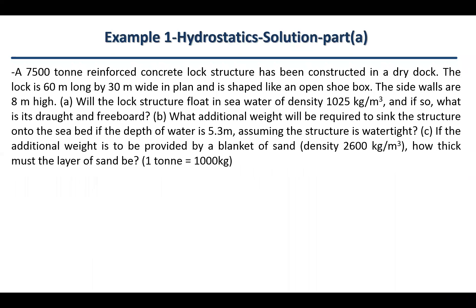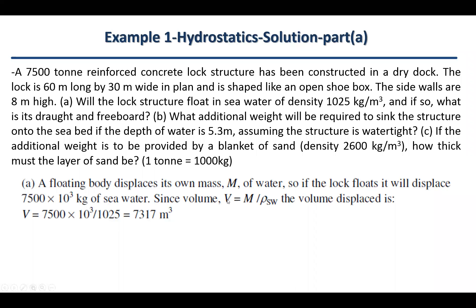For section A, we use the buoyancy force equation: m = ρV, or rearranged, V = m/ρ, where ρ is the density of salt water. The volume can be calculated as mass divided by density: 7,500,000 kg divided by 1,025 kg/m³, giving a volume of 7,317 cubic meters.